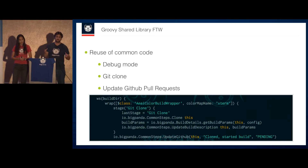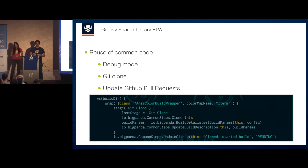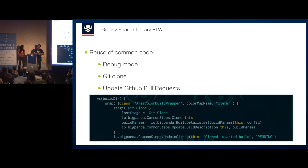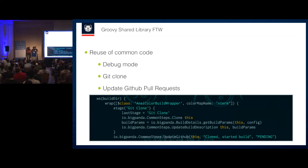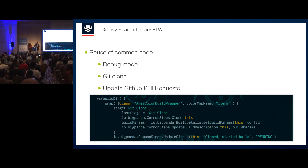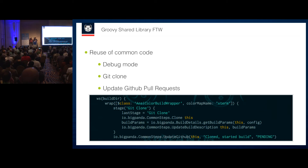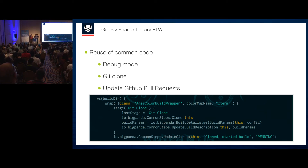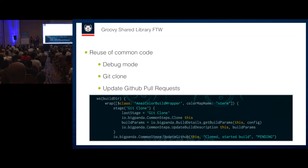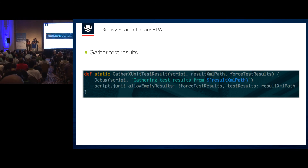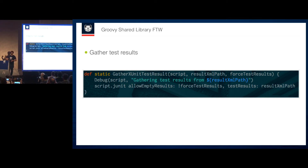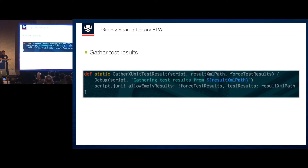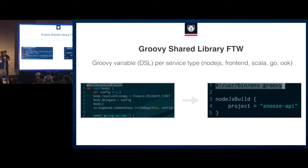So this is something Kohsuke mentioned in his keynote — we started using something called the Groovy Shared Library, which is a really great feature. We can have a repo in GitHub with Groovy code, and Jenkins makes that code available to all jobs. This meant we could start reusing code, whether it's a Node.js job, Scala, Golang, or whatever. Common steps like Git cloning, updating GitHub pull requests, updating the build description, gathering test results — one function for all of that.